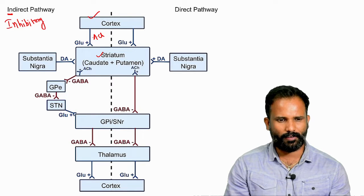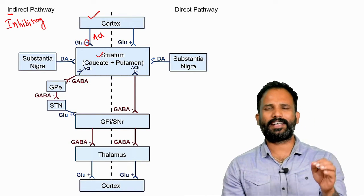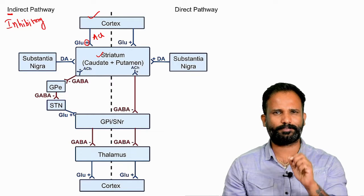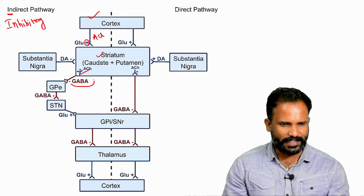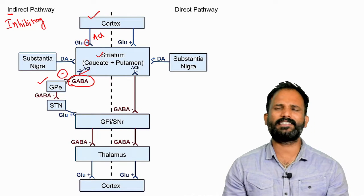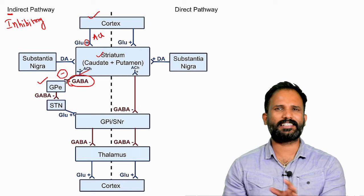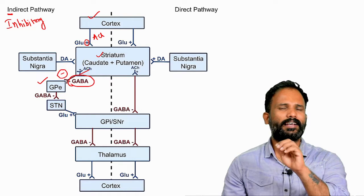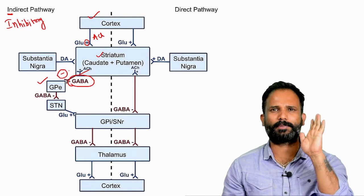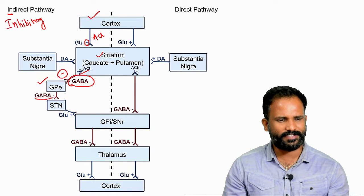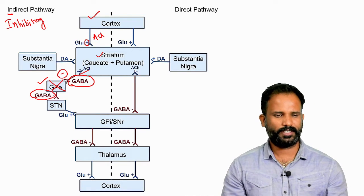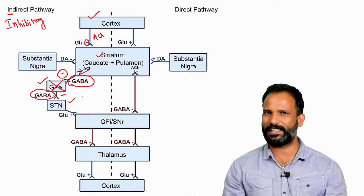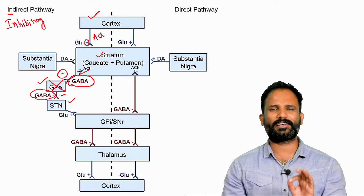In the indirect pathway, the motor cortex sends an order carried to the striatum. The neurotransmitter here is glutamate or acetylcholine, which is excitatory, so the cortex excites the striatum. The striatum then releases GABA, which is inhibitory, and inhibits globus pallidus externus. Since globus pallidus externa is inhibited, it can no longer release GABA, so there is no more inhibition of the subthalamic nucleus — meaning the subthalamic nucleus is now excited.